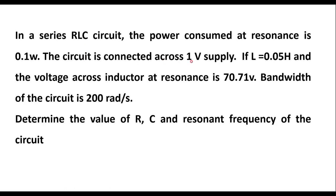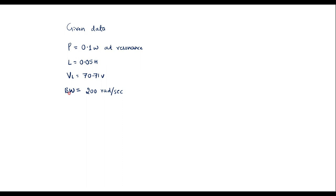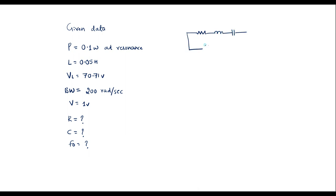Also, the circuit is connected across 1 volt supply, that is supply voltage V is equal to 1 volt. We are supposed to calculate R, capacitor value C, and resonant frequency F0. Let me draw the series RLC circuit. We have R, L and C connected in series with supply voltage V equal to 1 volt.